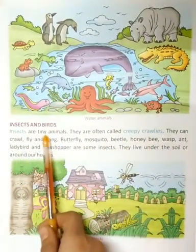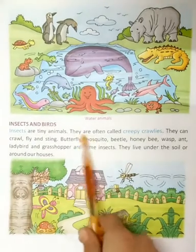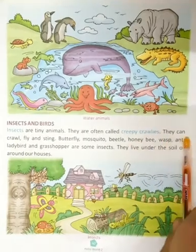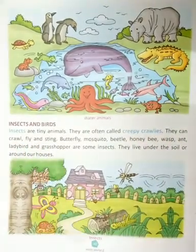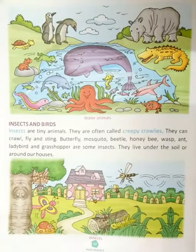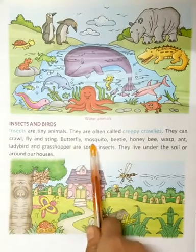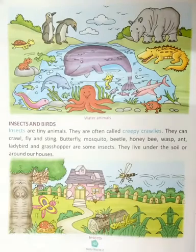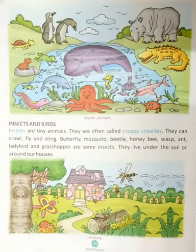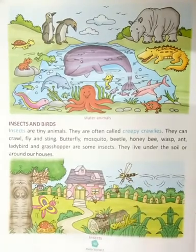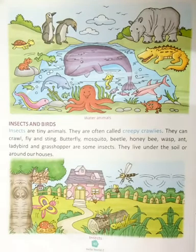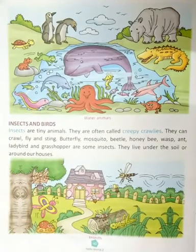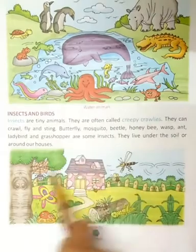Next we have insects and birds. Insects are tiny animals, often called creepy crawlies. They can crawl, fly, and sting. Butterfly, mosquito, beetle, honeybee, wasp, ant, ladybird, and grasshopper are some insects. They live under the soil or around our houses.